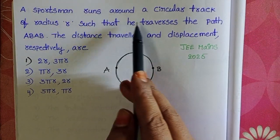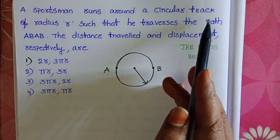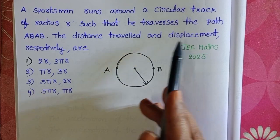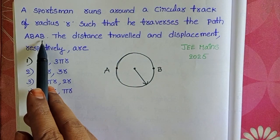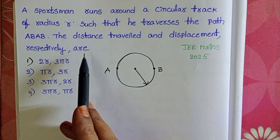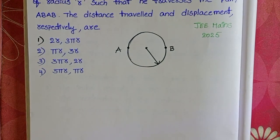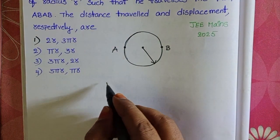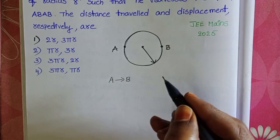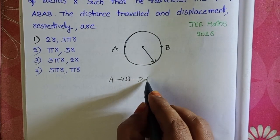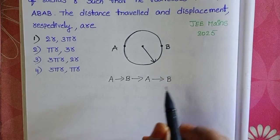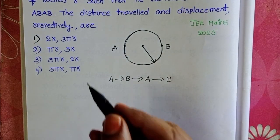A sportsman runs around a circular track of radius R such that he traverses the path A→B→A→B. The distance travelled and displacement respectively are to be found. In the given question, a sportsman travels a distance from A to B, again from B to A, and again from A to B. This is the path travelled by the sportsman.